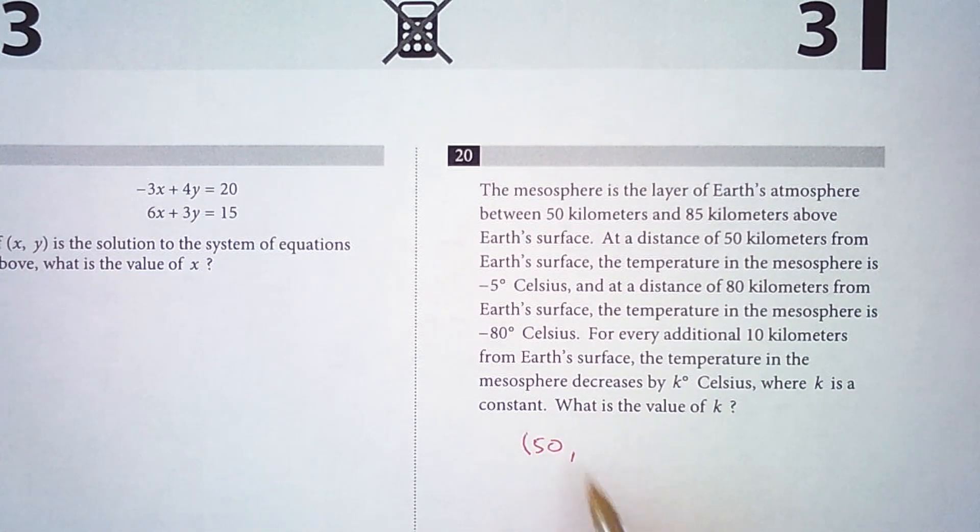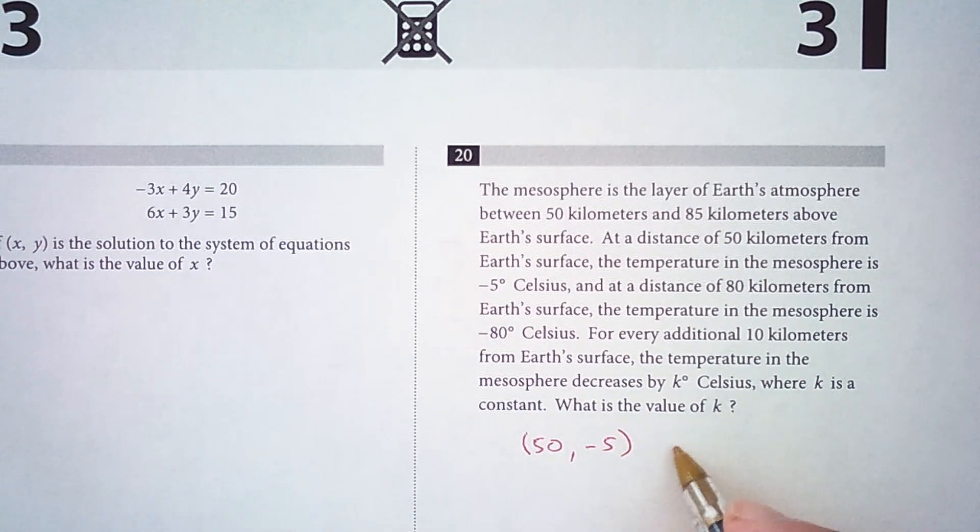At 50 kilometers, the temperature is negative 5 degrees Celsius. And at 80 kilometers, the temperature is negative 80 degrees Celsius. So these are our two points.